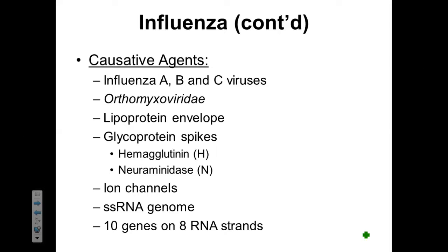There are several different viruses that can cause influenza. They include influenza A, B, and C viruses. These are going to be categorized as orthomyxoviridae. These viruses will have a lipoprotein envelope that contains glycoprotein spikes — particularly, they're going to have H and N spikes.